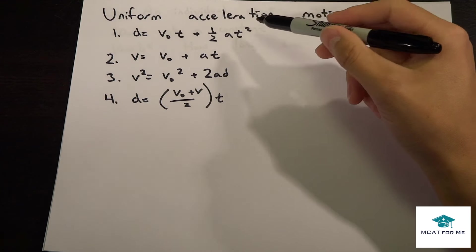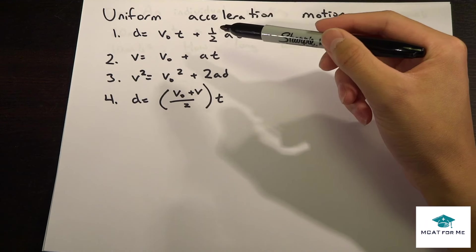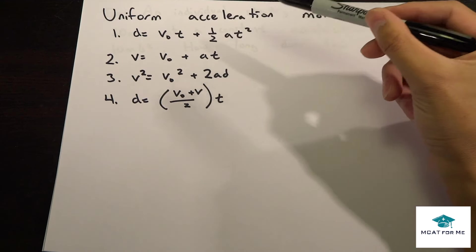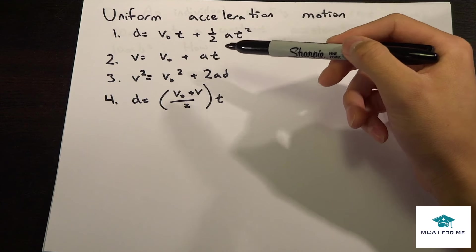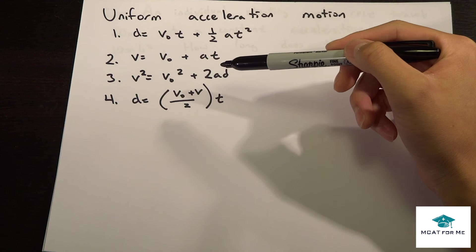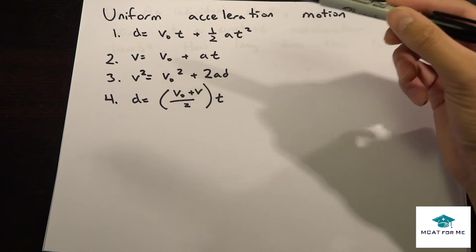And so that is these four equations right here. So the first one says distance is the velocity initial times the time plus 1 half at squared. And the second one, v equals v0 plus at, third one, v squared equals v0 squared plus 2ad and d equals v0 plus v over 2 times t.